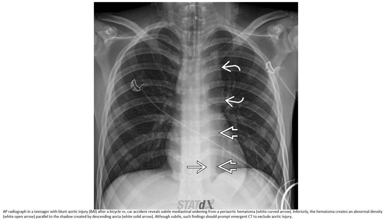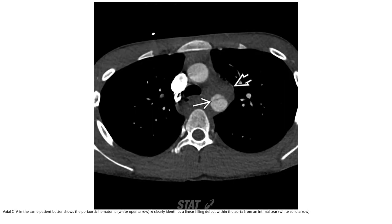A chest radiograph in a teenager with aortic injury from a bicycle or ski accident reveals subtle mediastinal widening from a periaortic hematoma extending inferiorly. The hematoma creates an abnormal density parallel to the shadow created by the descending aorta, and these subtle radiograph findings should prompt CT to exclude aortic injury.